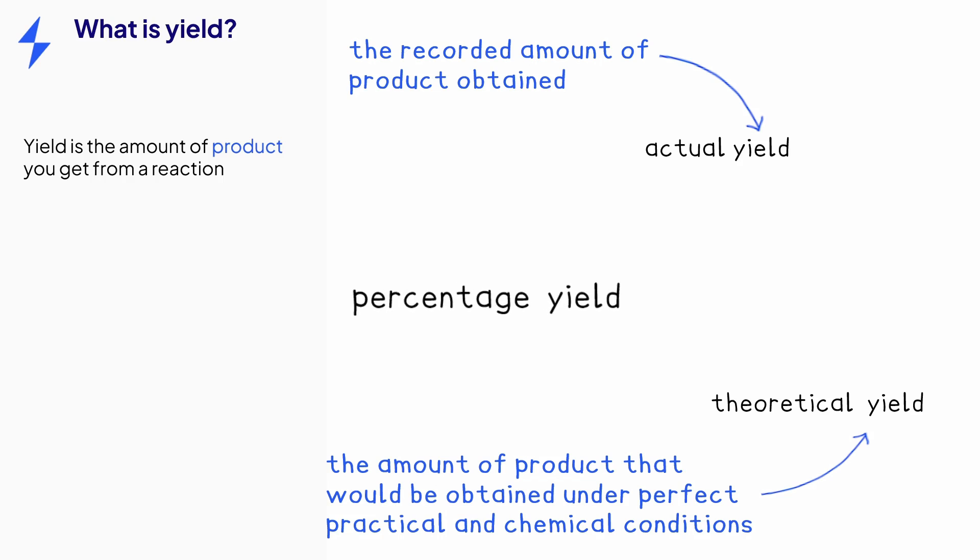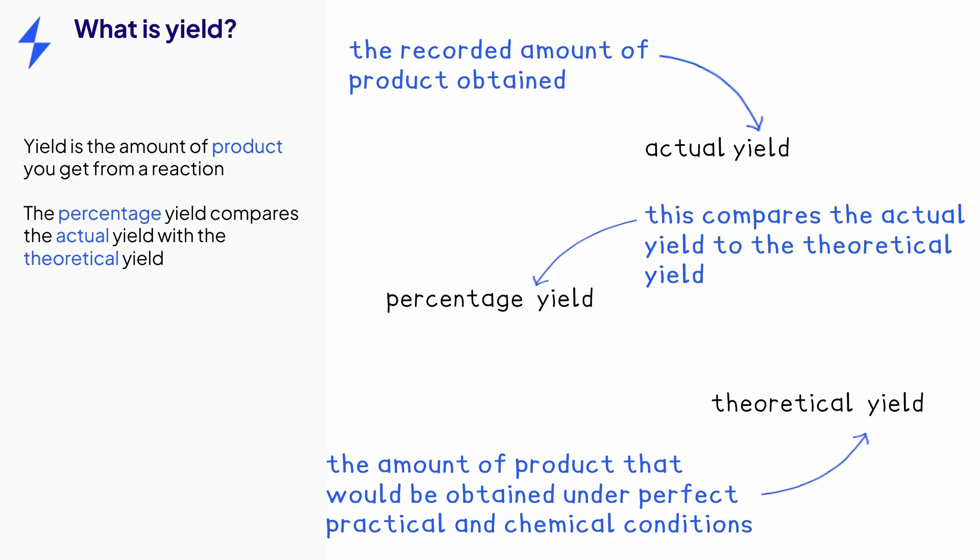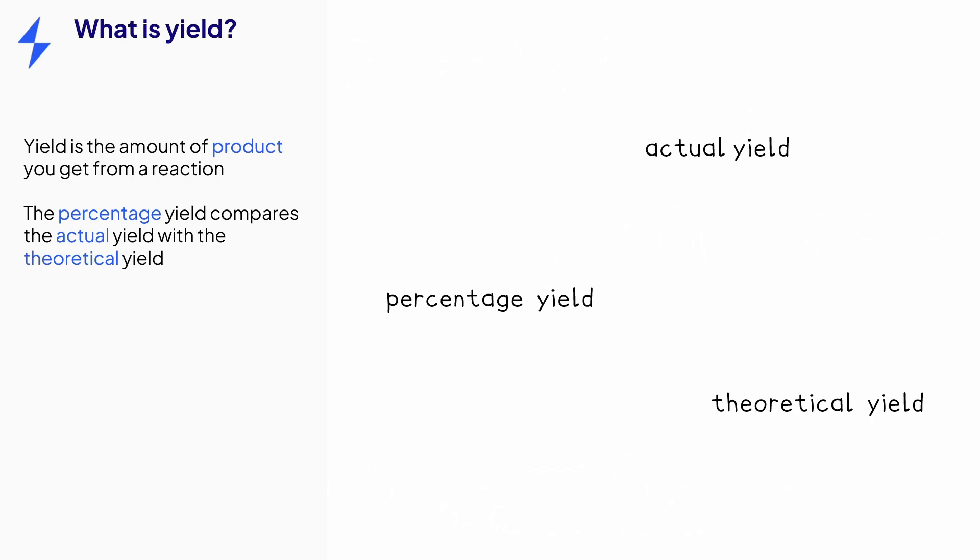And finally the percentage yield. Now this yield compares the actual yield to the theoretical yield. Percentage yield tells us how much of the theoretical yield that was actually produced in a reaction. And as the name suggests, this is expressed as a percentage.